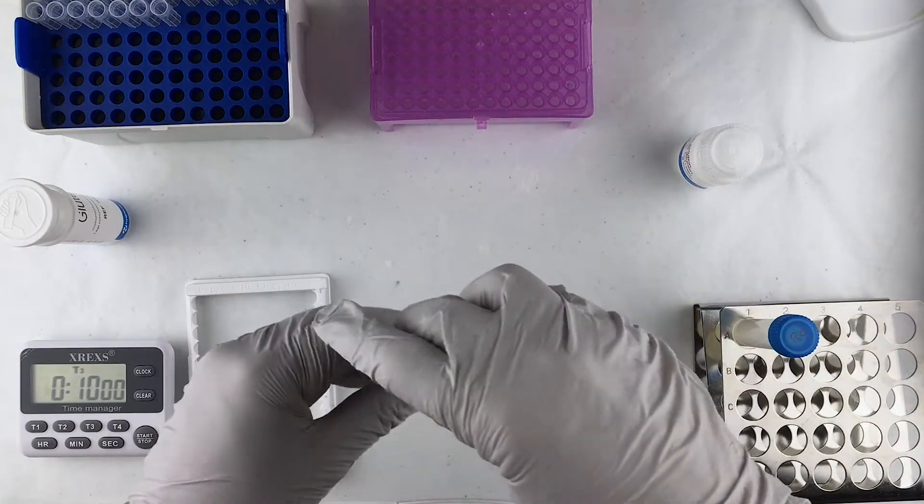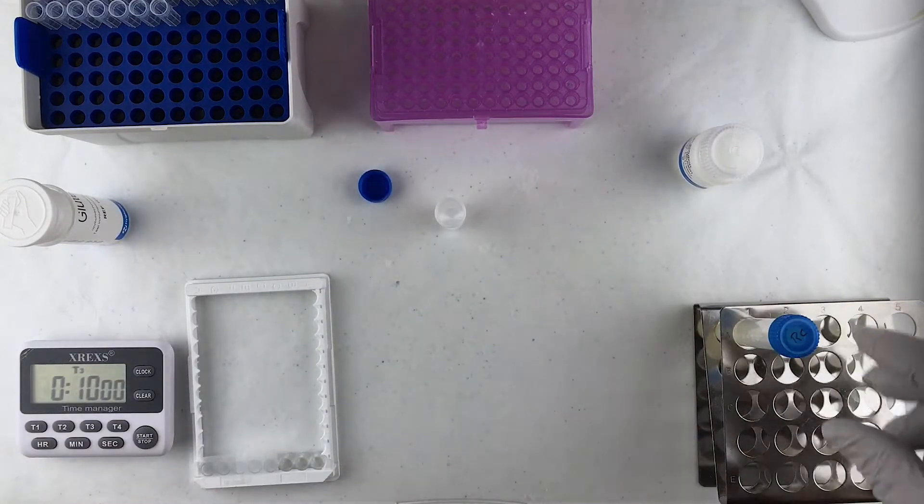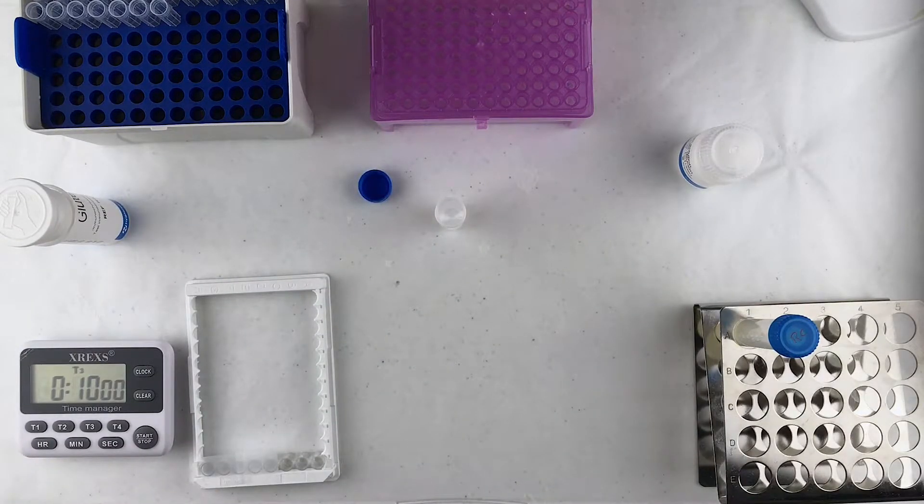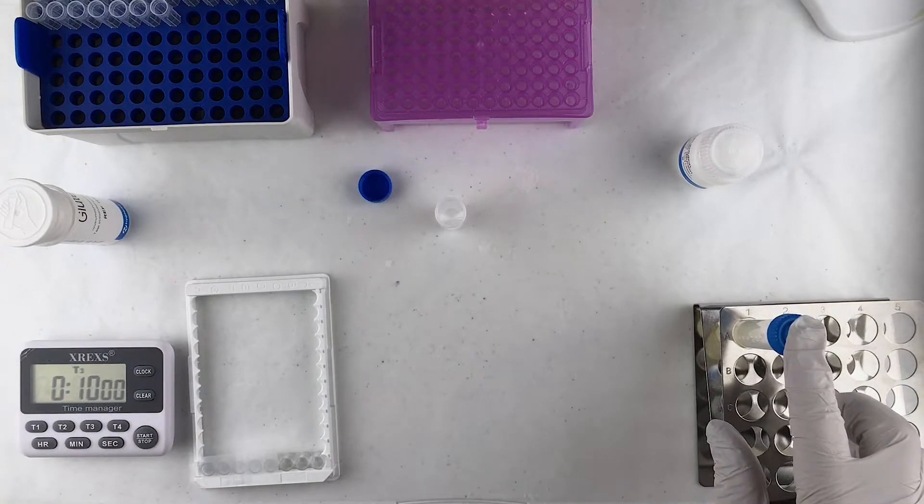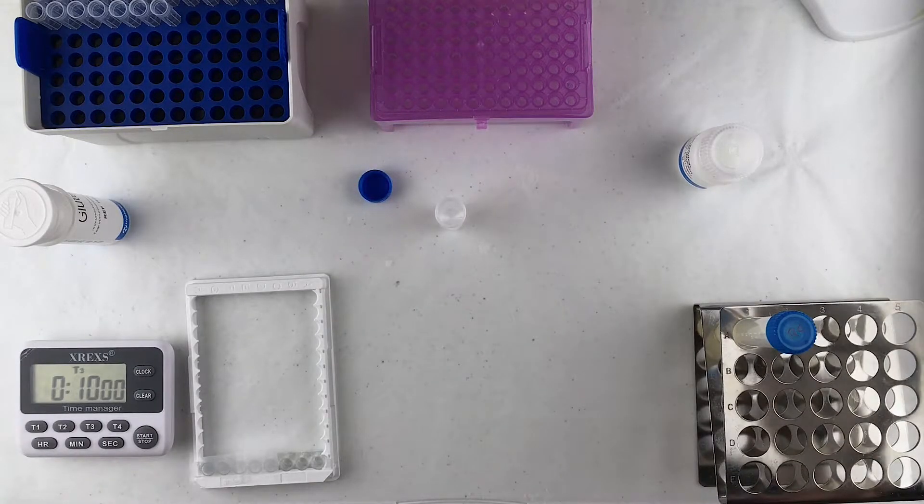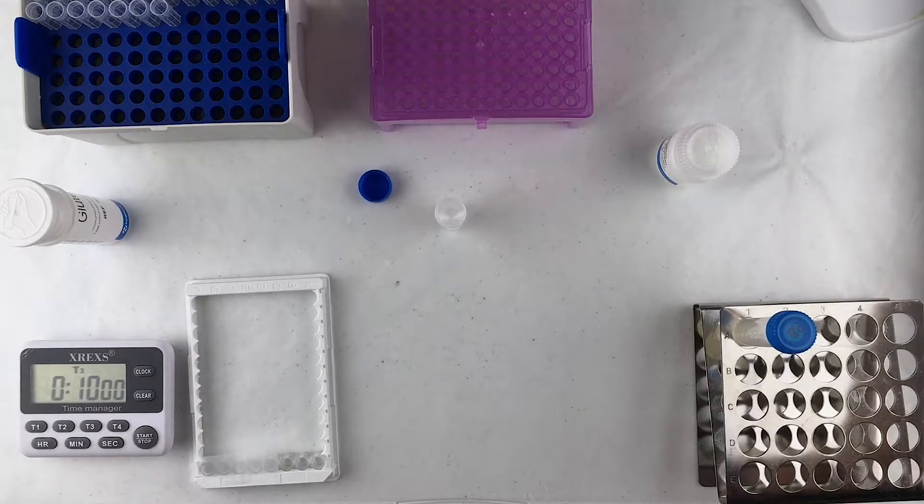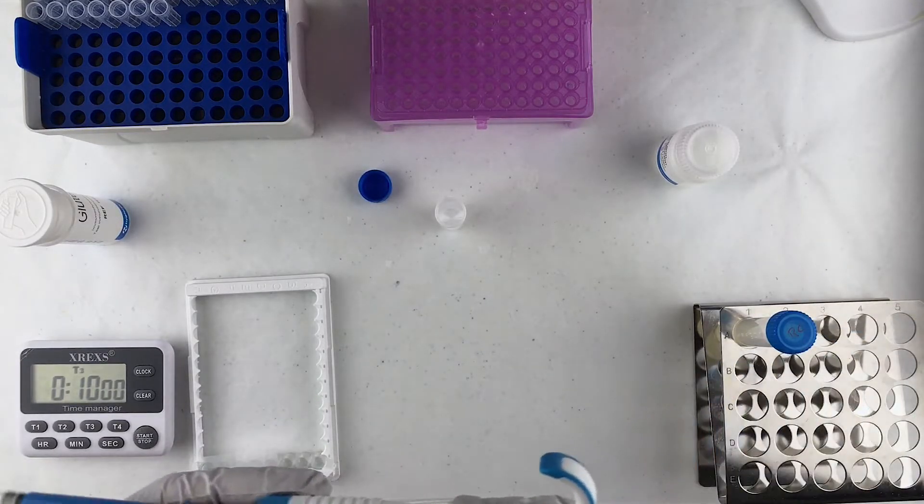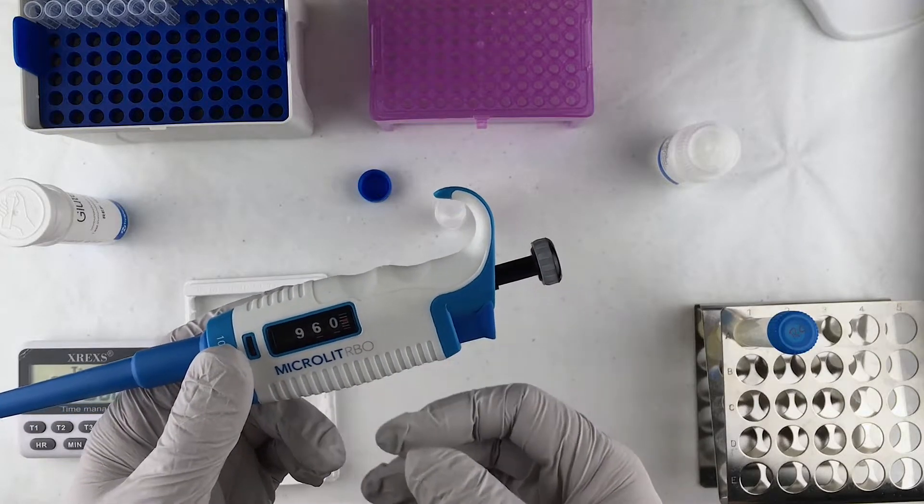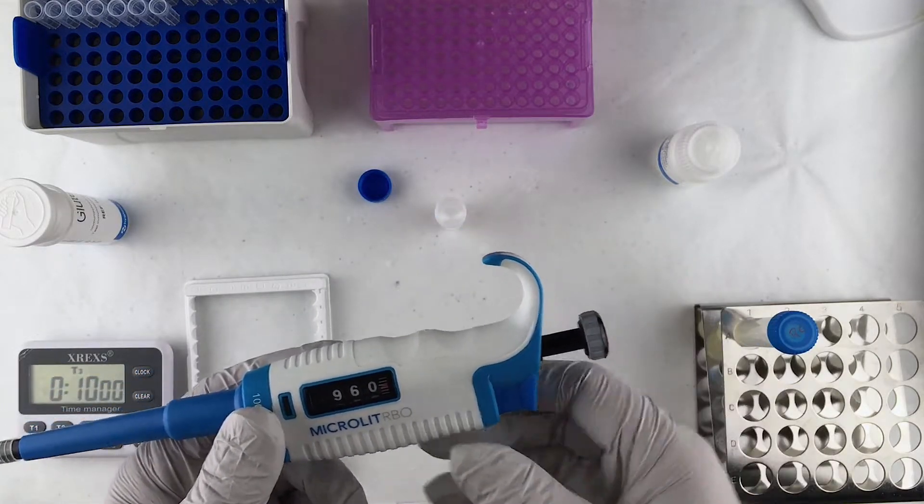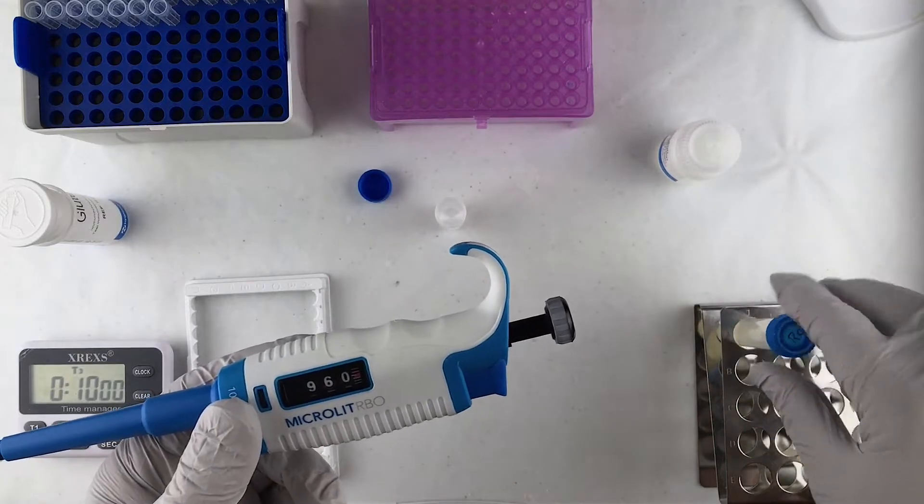And we do that in this empty vial. So we're going to do this at a limit of detection of three parts per million. What that means is a one to 25 ratio of extracted food sample to dilution solution. So at one to 25, what that means in practical numbers is 960 microliters of dilution solution and 40 microliters of the food sample.